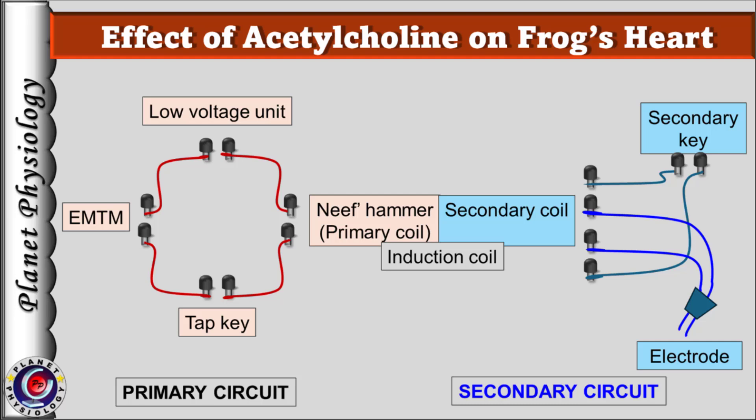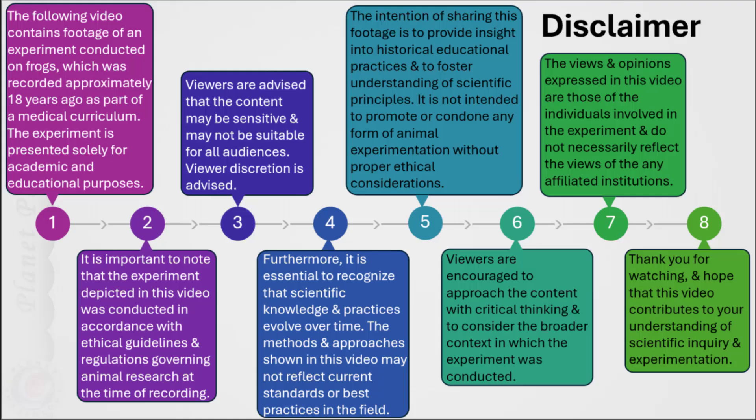To identify the effect of an unknown drug on the heart, we check the effect of vagal and crescent stimulation before and after application of the drug, as it assists in drawing proper conclusions. We will discuss how later in the video. Before we proceed, kindly read the disclaimer. These experiments were recorded almost 18 years back purely for academic purposes.